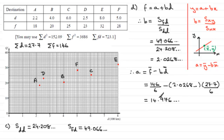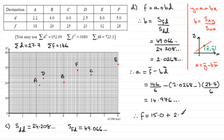So substituting our values for B and A back into our equation, we therefore have F equals A — rounding to three significant figures, that's 15.0 — plus B times D, and B rounded to three significant figures is 2.03. So the equation is F equals 15.0 plus 2.03D, given to three significant figures. And there's your equation for the regression line.